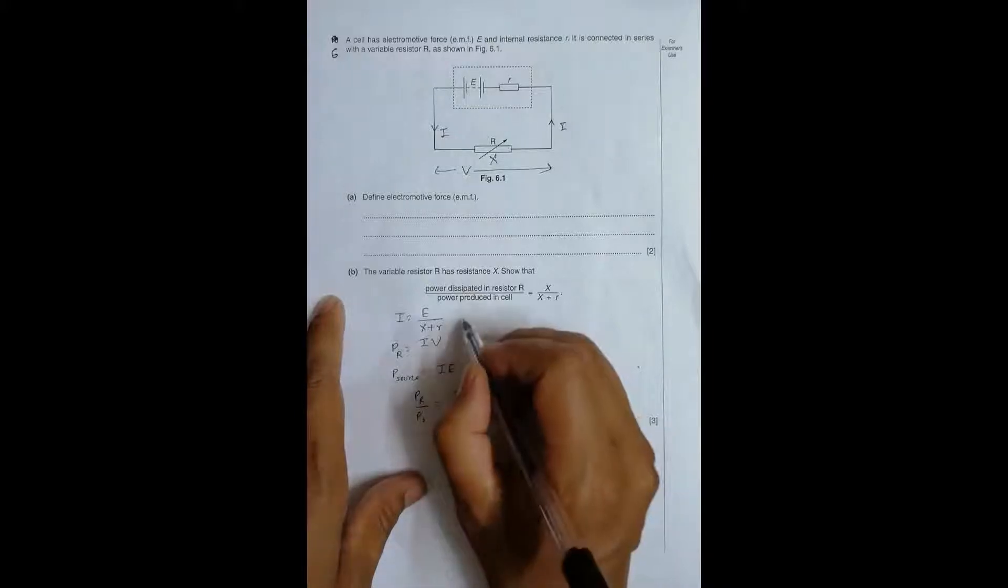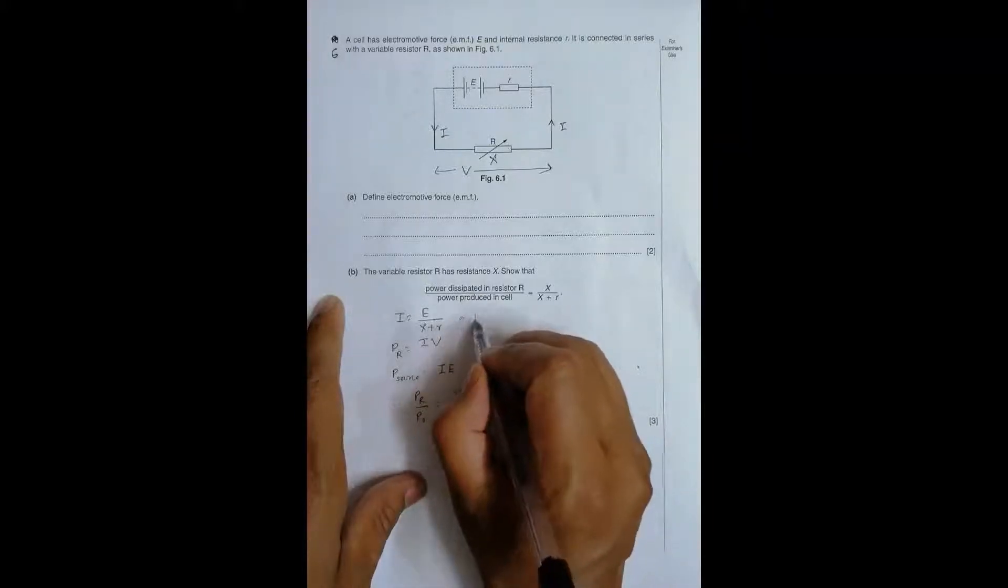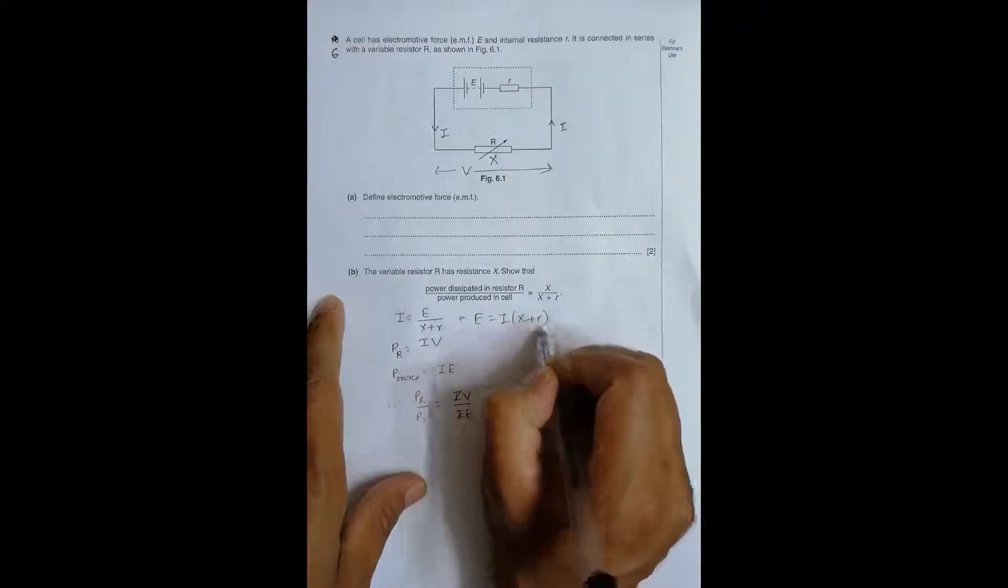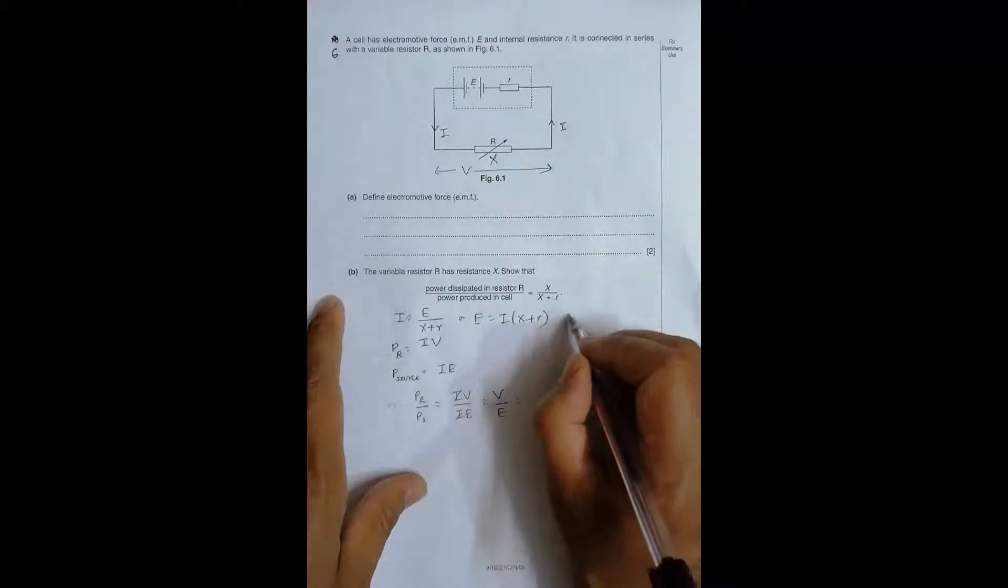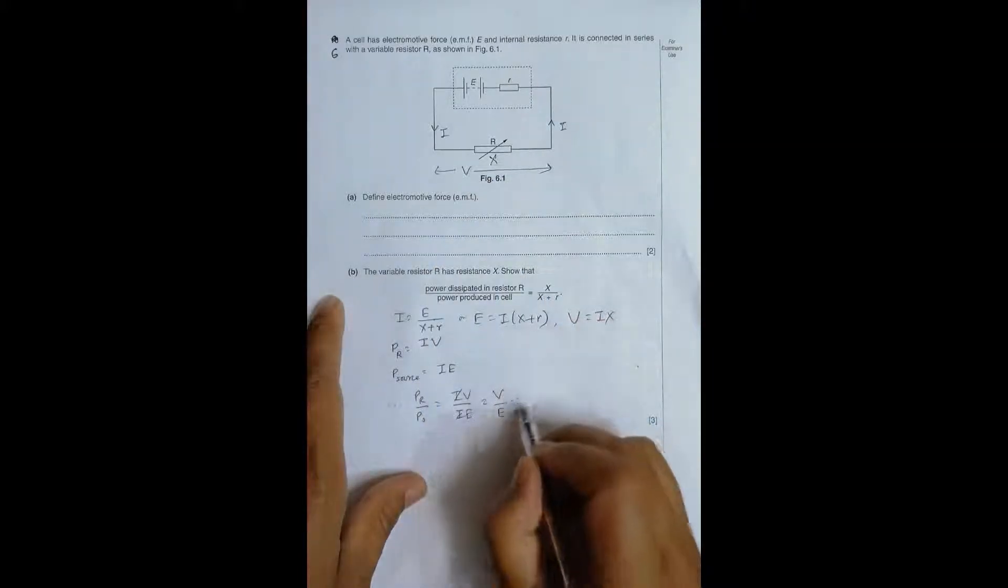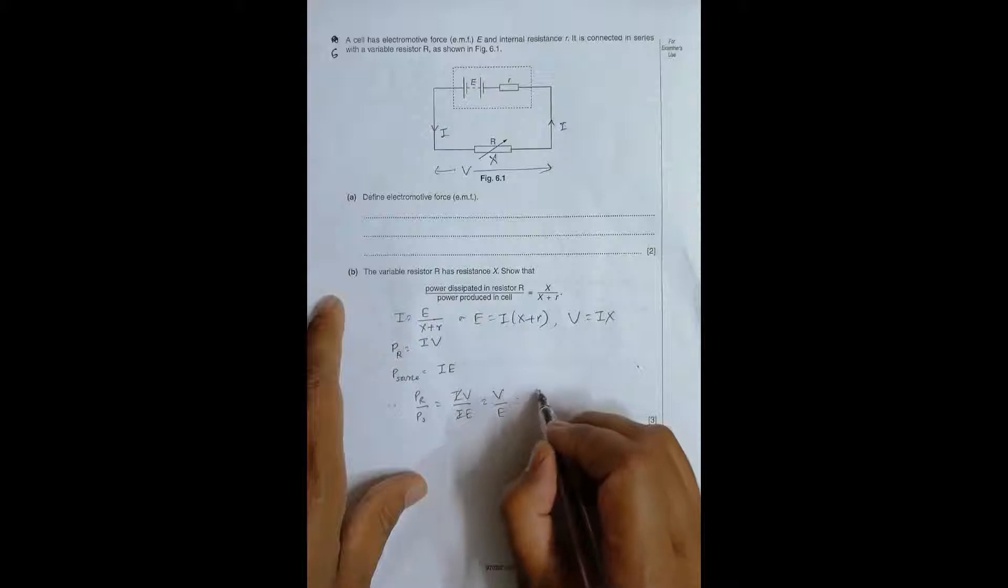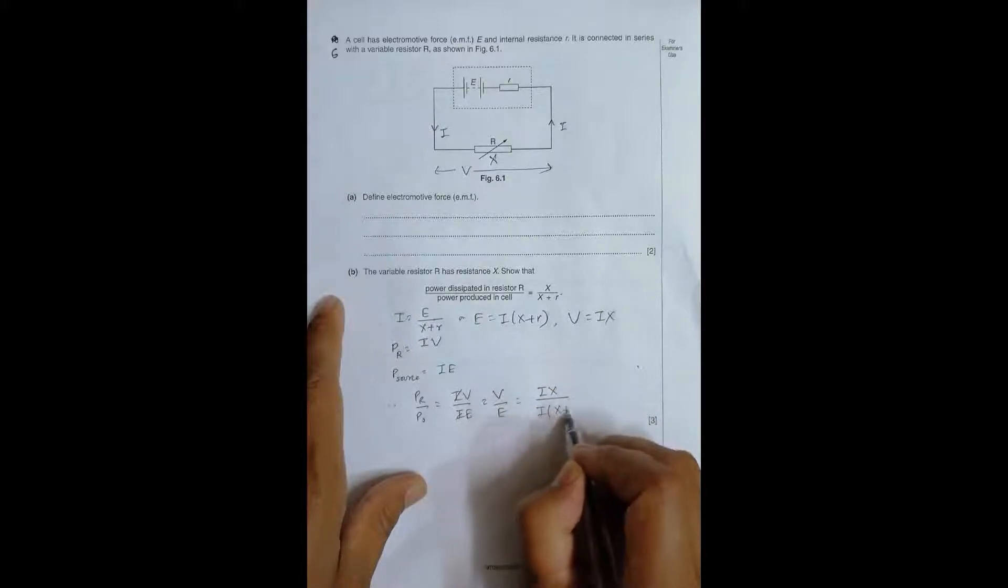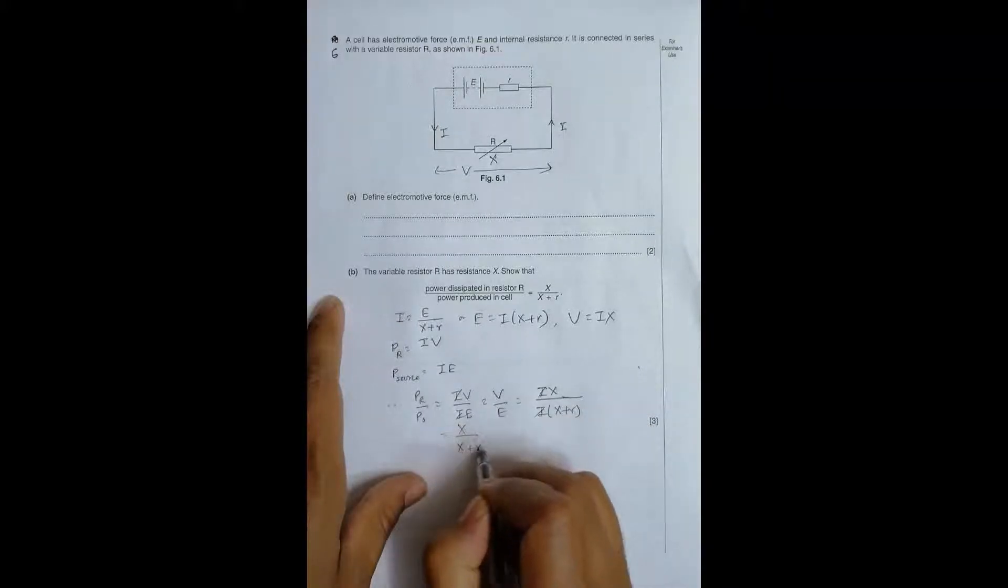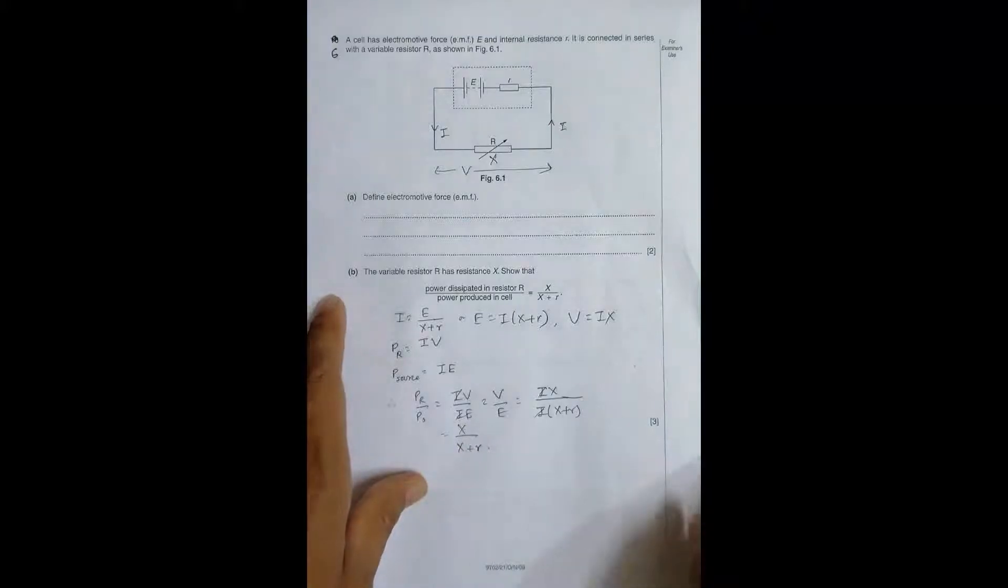From here we have E equals I times X plus R and similarly we must have V equals I into X. So when I put these values it will be I X divided by I times X plus R. If I cut this I it becomes X by X plus R.